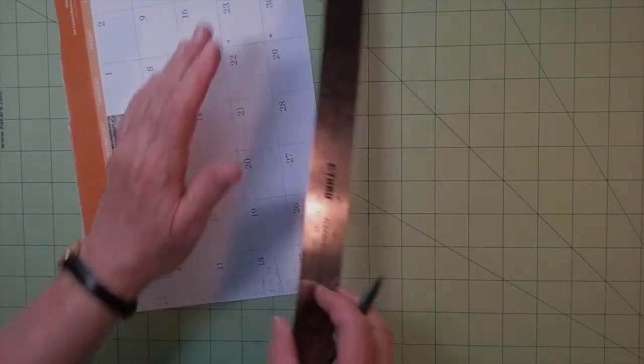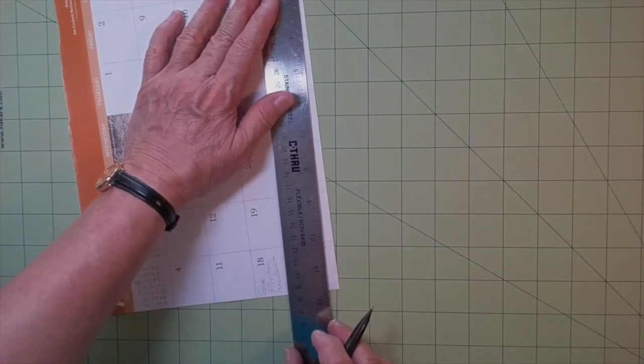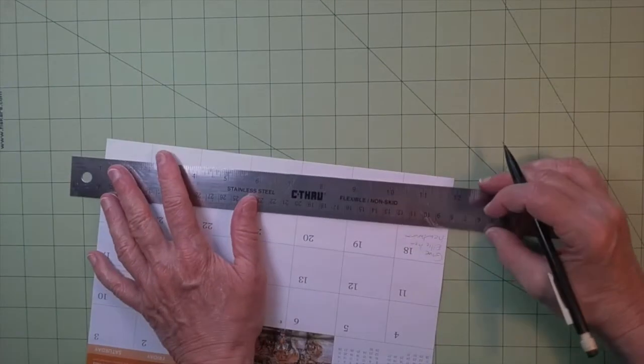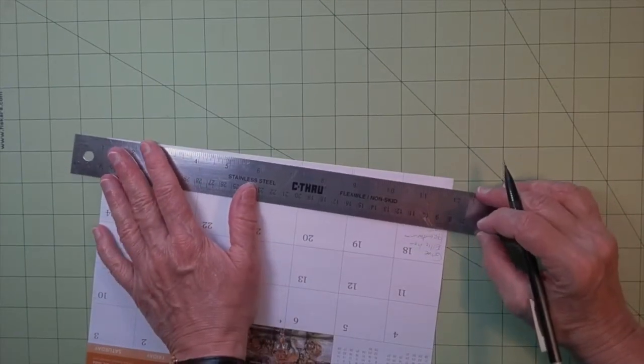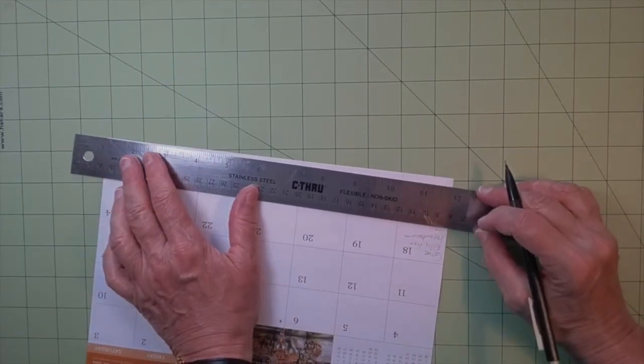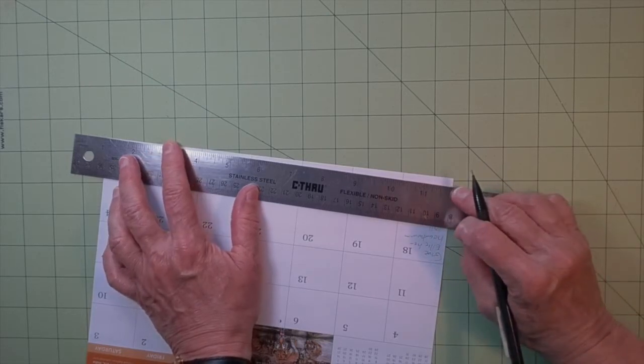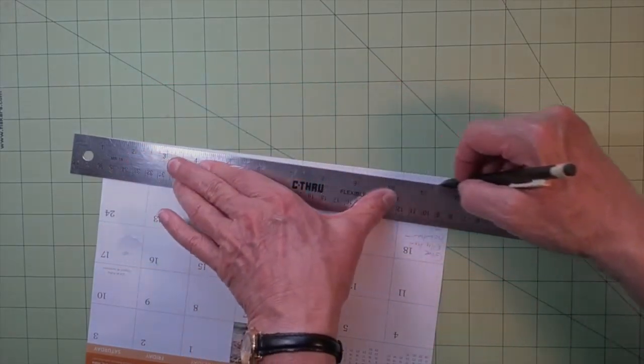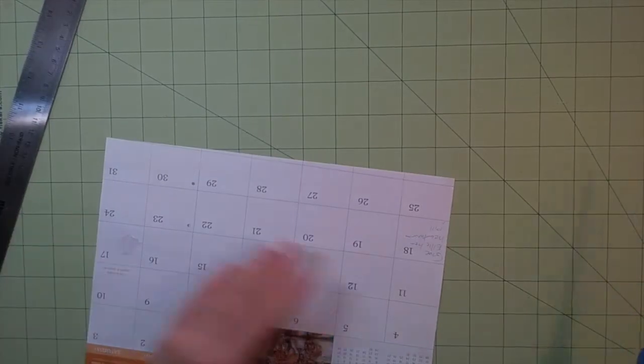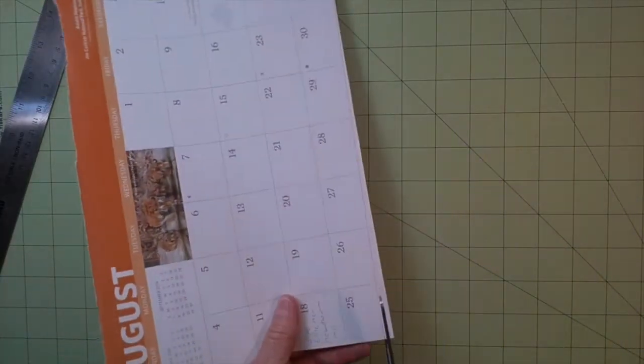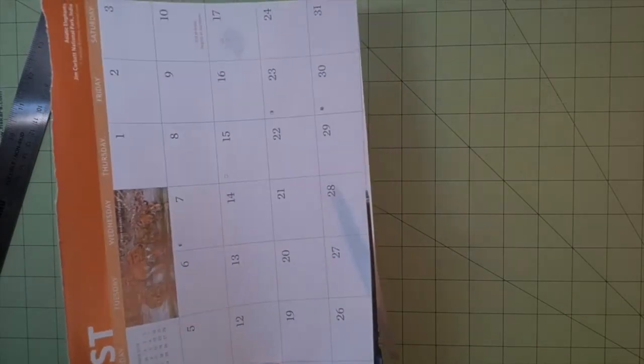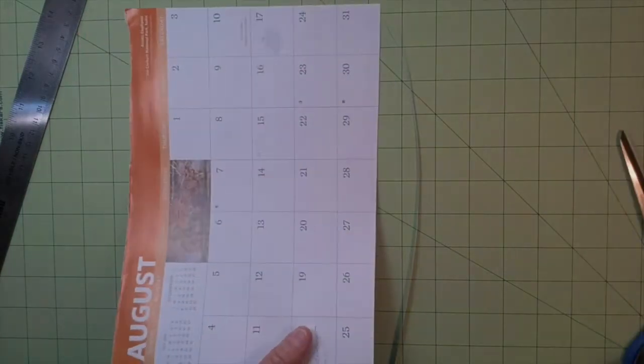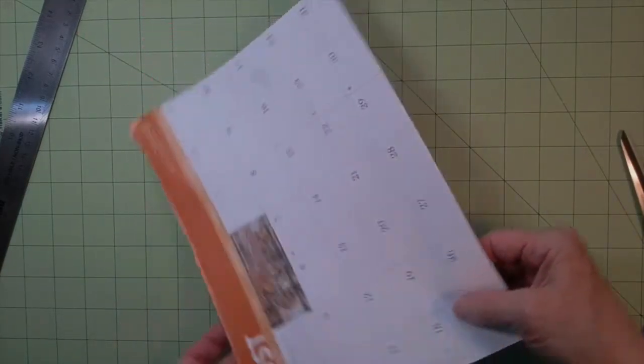I'm just going to mark a quarter of an inch here. Turn this around here. Taper it up to the point. Put the ruler on my quarter inch mark and at the point of the paper up there. Draw a line. There we go. Now we have the right shape for all of our beads.